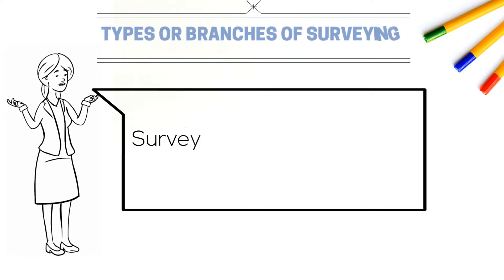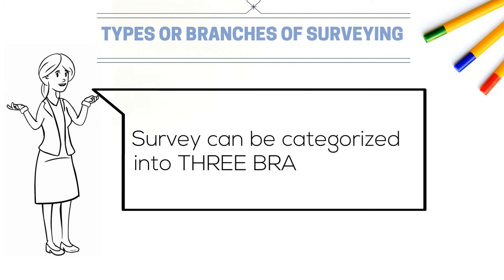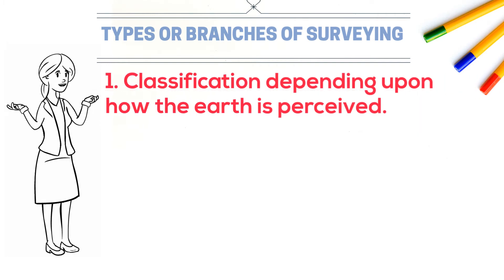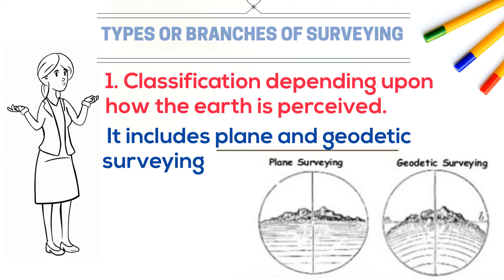Types or branches of surveying. Survey can be categorized into three branches as follows. Classification depending upon how the earth is perceived. It includes plane and geodetic surveying.